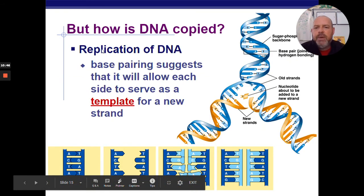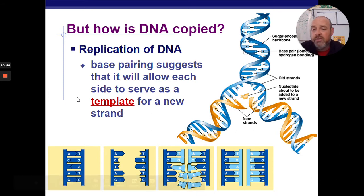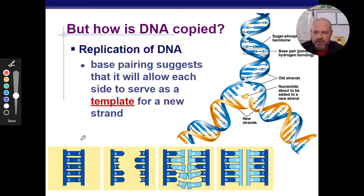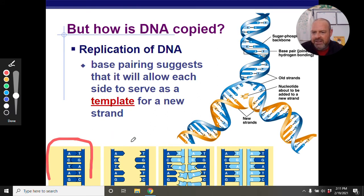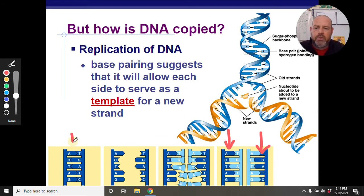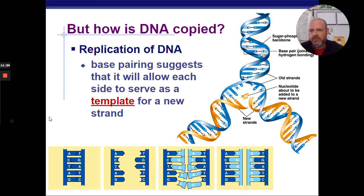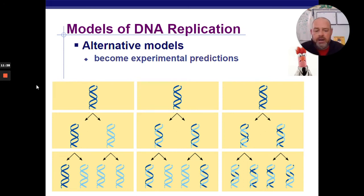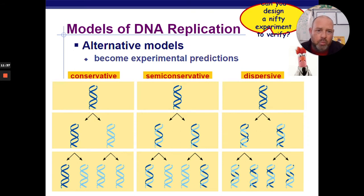Replication of DNA — base pairing allows each strand to serve as a template for a new strand. The basic idea: you unzip the two strands, new base pairs filter in, and now you have two identical strands of DNA where before you had one. It's almost as simple as that. There were some alternative methods suggested for how this goes: conservative, semi-conservative, and dispersive.